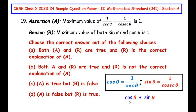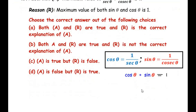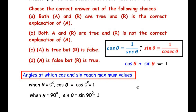Now let us see if the maximum value of cosθ + sinθ is equal to 1 or not. We need to find at what value of θ, cos and sine each reach their maximum values. When θ = 0°, cosθ = cos0° = 1, which is its maximum value. And when θ = 90°, sinθ = sin90° = 1, which is its maximum value. So at 0° and 90°, cos and sine reach their maximum values of 1.